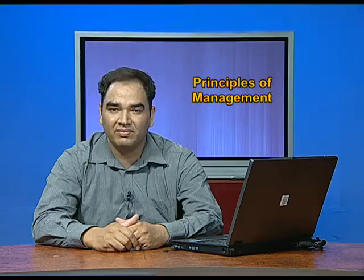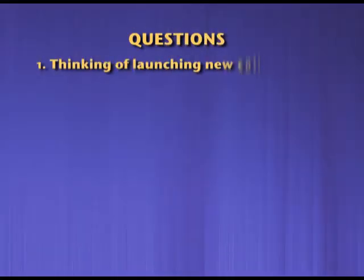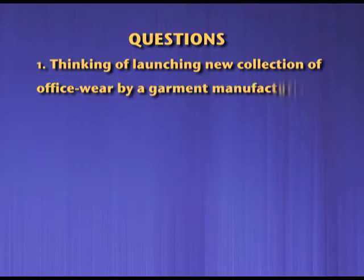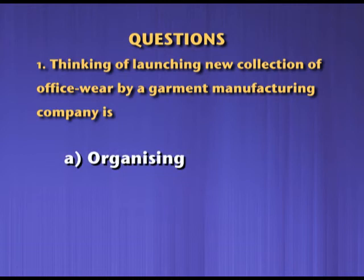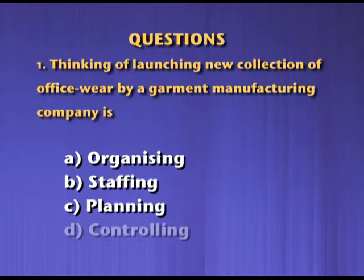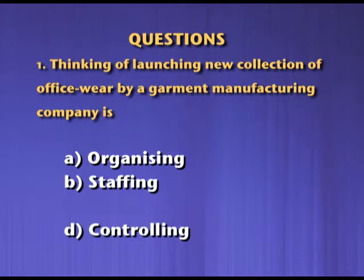Question number one: Thinking of launching a new collection of office wear by a garment manufacturing company is: A. Organizing, B. Staffing, C. Planning, D. Controlling. The correct answer is C. Planning.